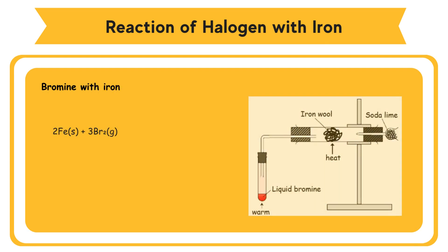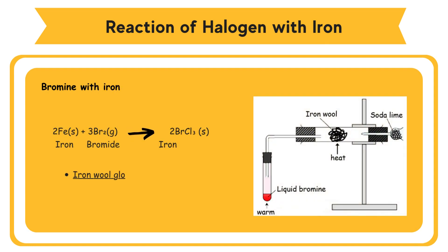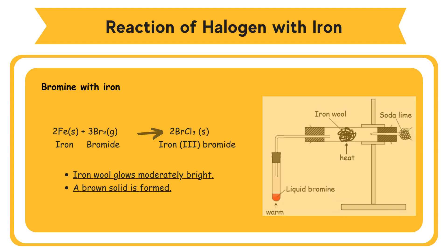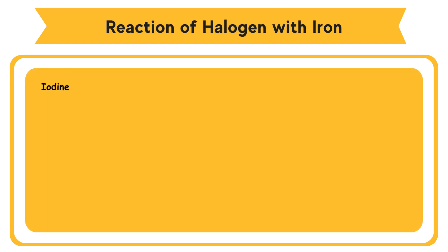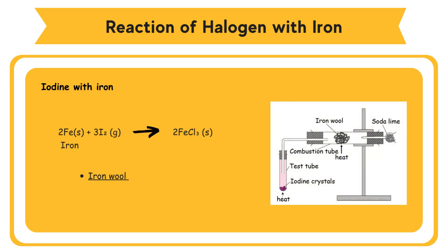For bromine with iron: iron glows moderately bright and a brown solid is formed. Iron reacts with bromine to form iron(III) bromide. For iodine with iron: iron glows dimly and a brown solid is formed. Iron reacts with iodine to form iron(III) iodide.